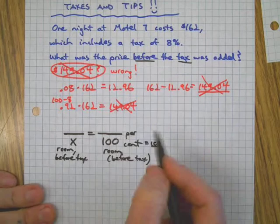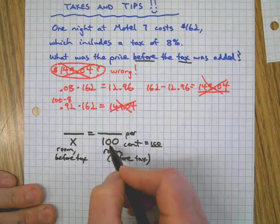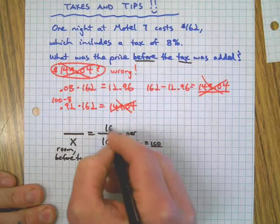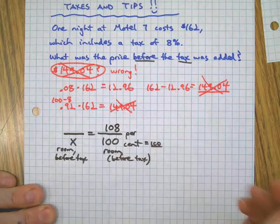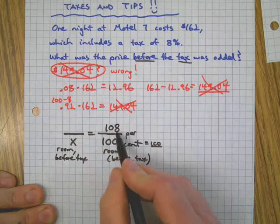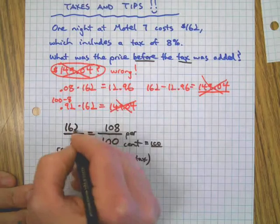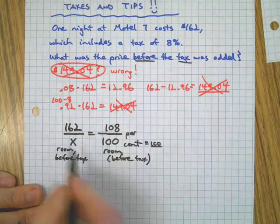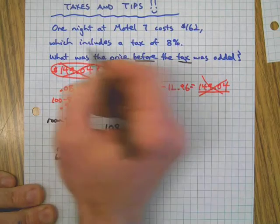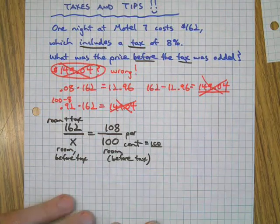The key with any proportion is setting it up the right way. The math is usually pretty simple. So the question here is, what goes on top of the hundred? Well, if a hundred represents the room, eight is the tax. So it's greater than the price of the room, right? A hundred percent plus eight percent in addition to. So this number 162 that the problem gave us, that is actually the room plus the tax, right? Includes the tax.